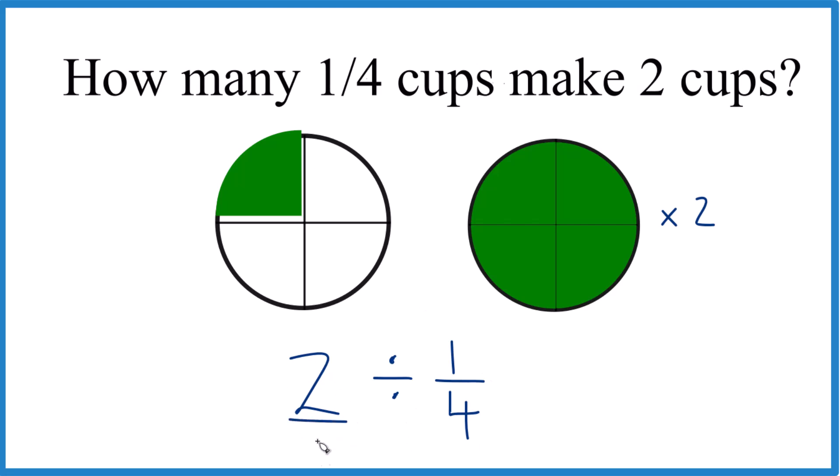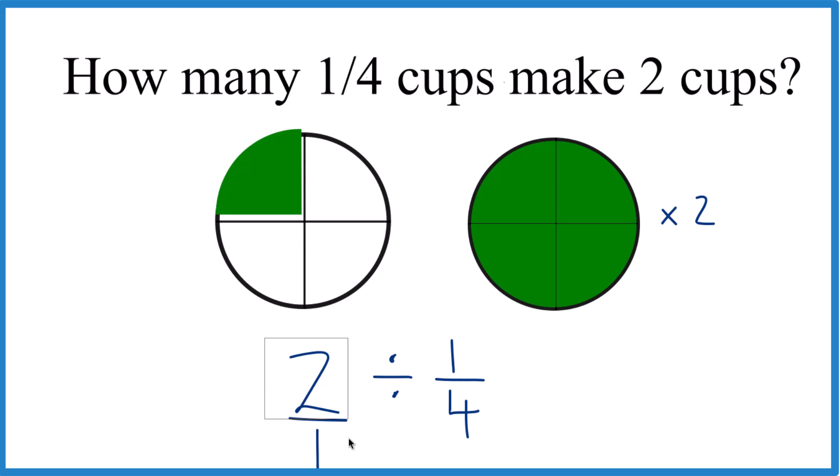It's good to call this two over one. It's still two. It's just a lot easier to do the math with. Everything lines up nicely. So let's do that.